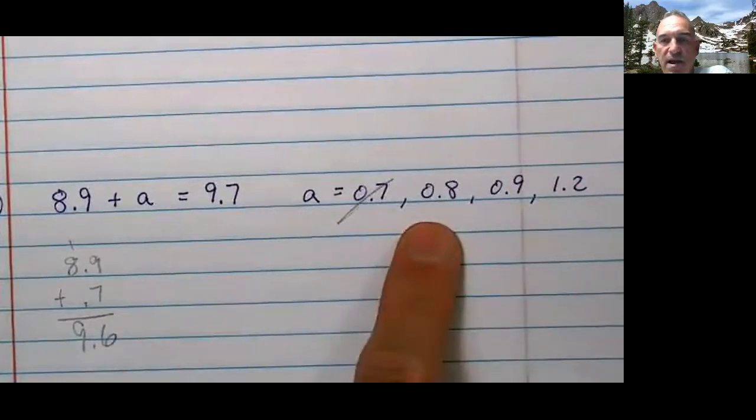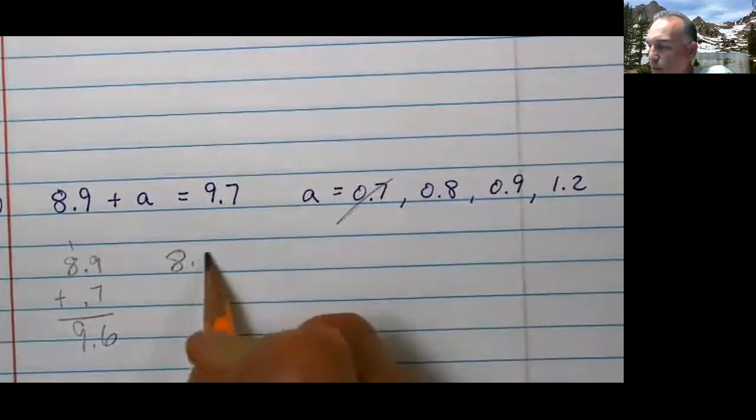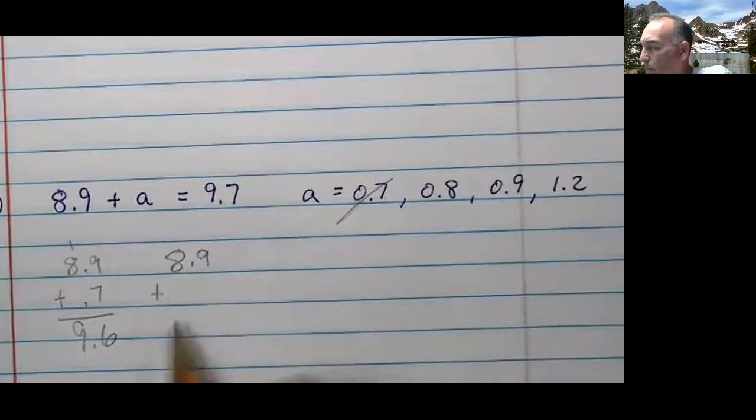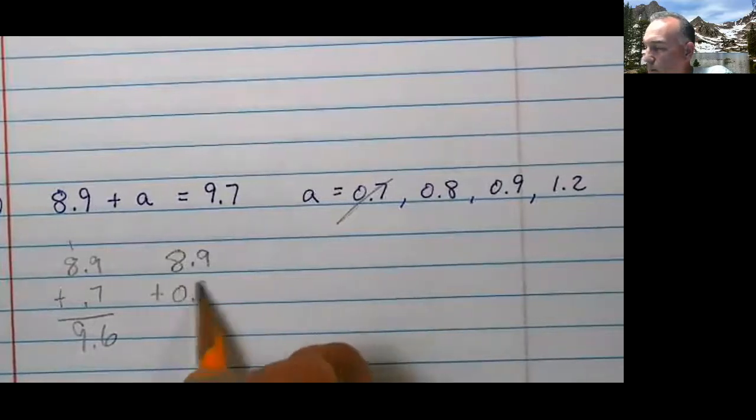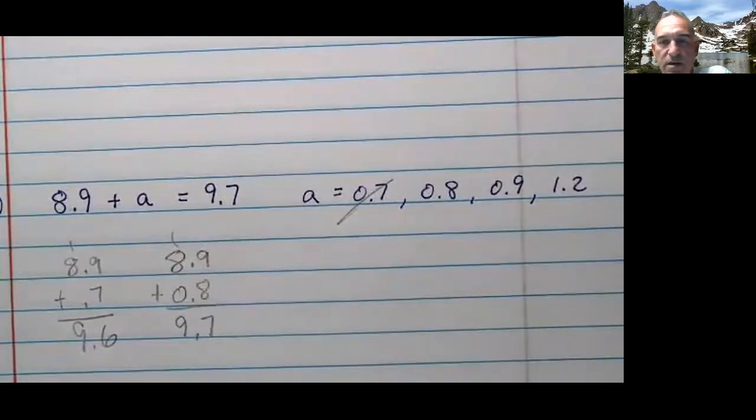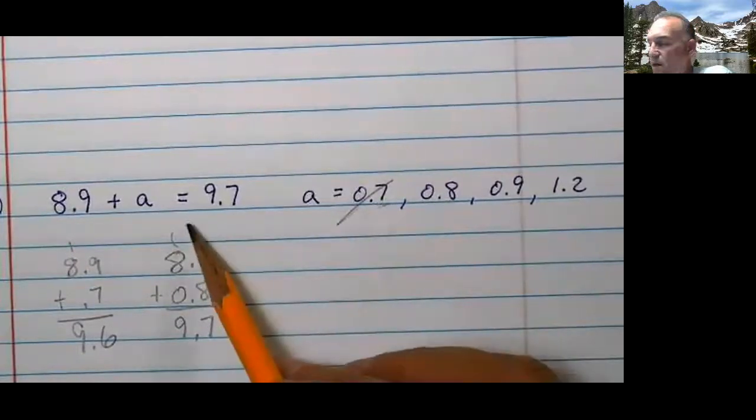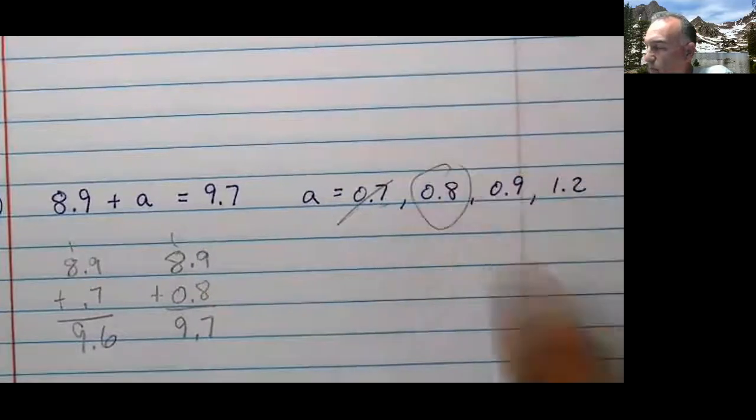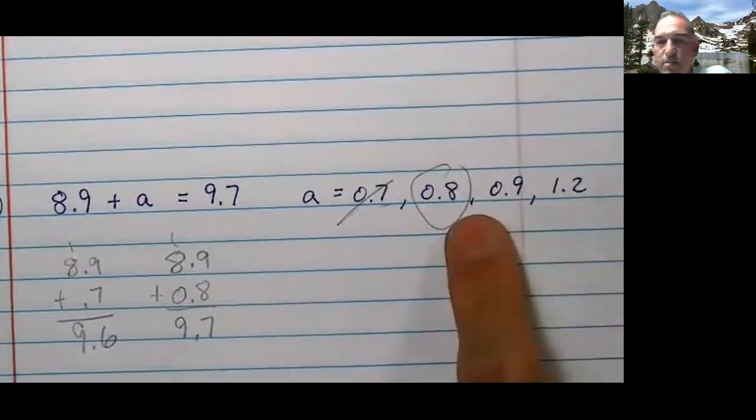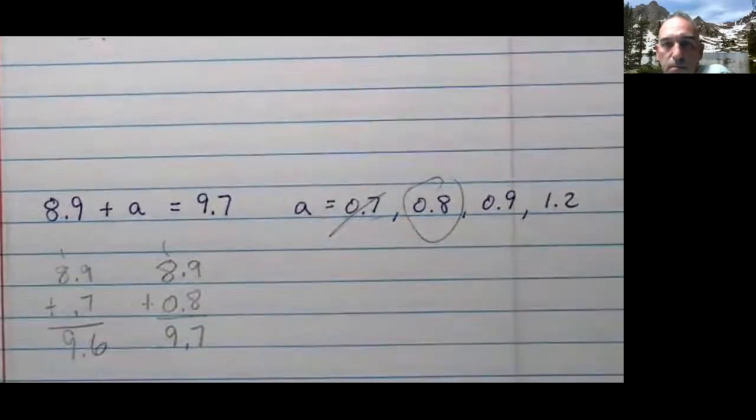How about this one? 0.8. So if I have 8.9 plus 0.8, I now have, oh, look at that. Is it 9.7? So this appears to be a solution since it's an equal sign and the numbers are different. It has to be that one. Doesn't it? Let us move on to another. Let us pause real quickly.